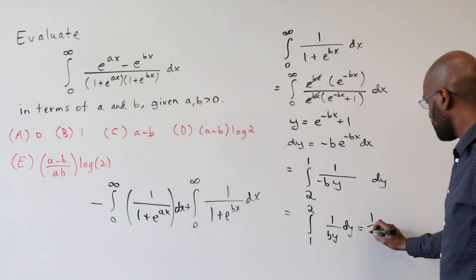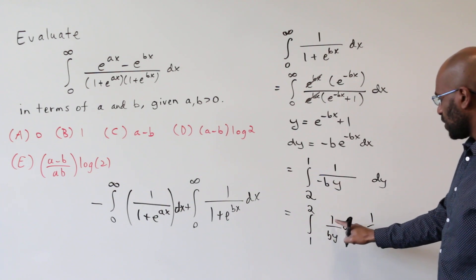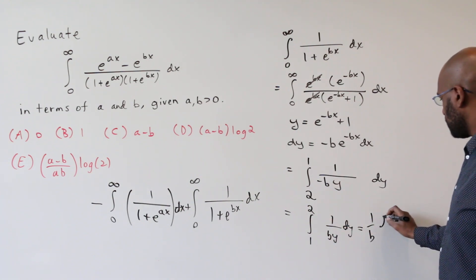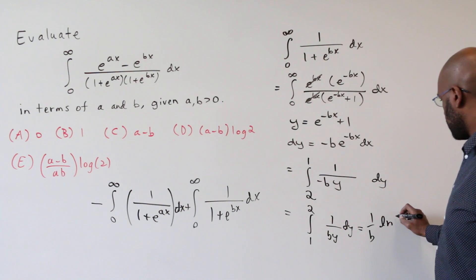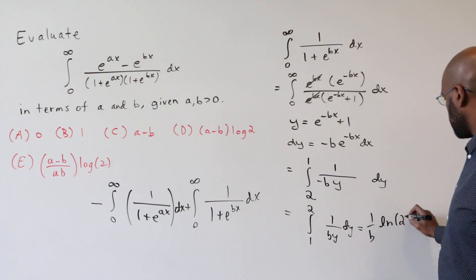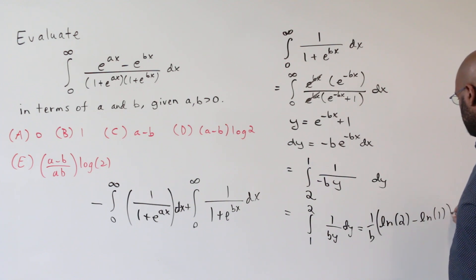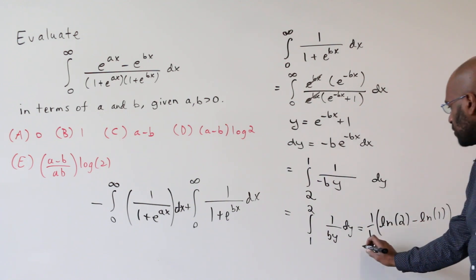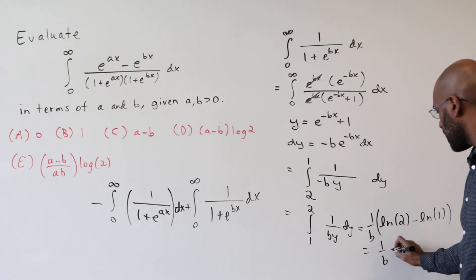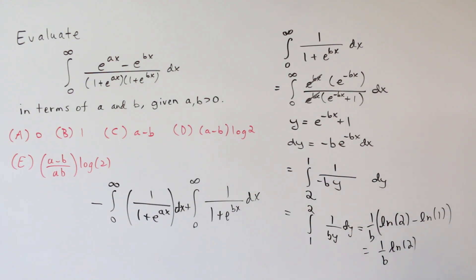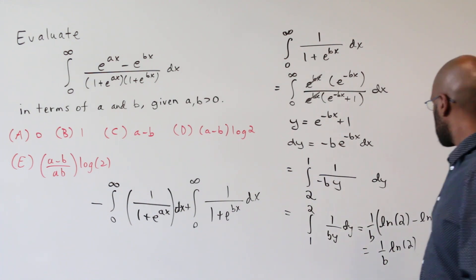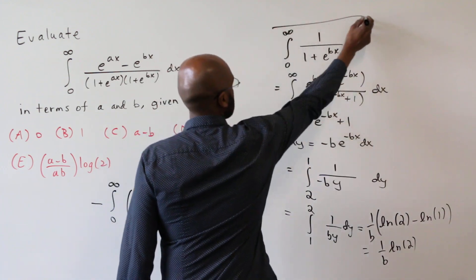Okay, so that's one over b times the integral from one to two of one over y dy, which is ln of two minus ln of one. ln of one is zero, so this works out to one over b, ln of two. Okay, great. So one over b ln of two is this integral.